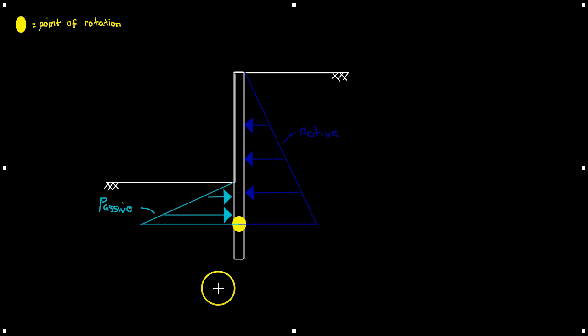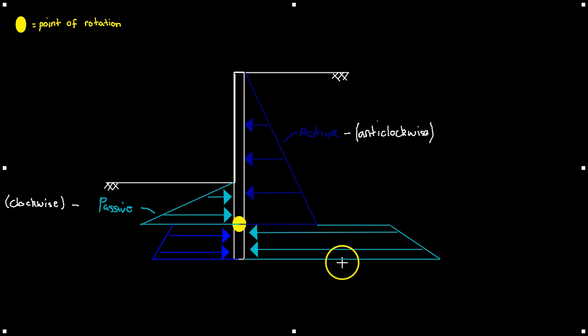Well, going back to our anti-clockwise and clockwise rotation, active pushes anti-clockwise, so by right our active is over here on the left and our passive is on the right at the bottom here. So you can see from our pressure diagram of this pile that we have active and passive on both sides due to the point of rotation.